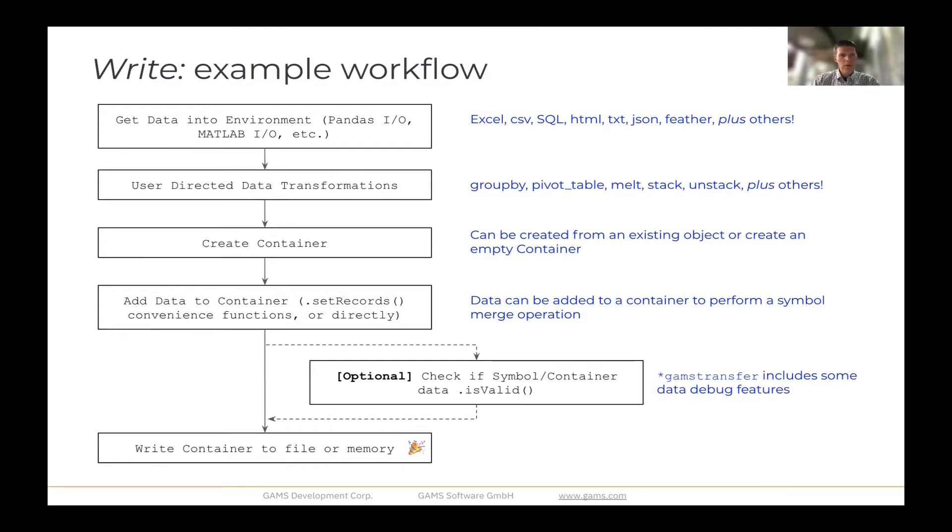When the user has read in all of this information, they have a bunch of different pandas data frames that are now in memory. And you can use this convenient function, the set records convenience function to add the records directly to the symbol object that now exists in the container.